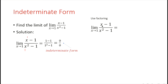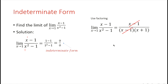In this case, we use factoring. The denominator x squared minus 1 is factorable — it becomes x minus 1 times x plus 1. We write the numerator as is, and factor the denominator. Notice that the x minus 1 in the numerator cancels out with the x minus 1 factor in the denominator. Since x minus 1 divided by x minus 1 equals 1, what remains in the numerator is 1, and the new form is 1 over x plus 1.